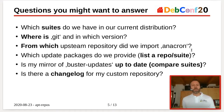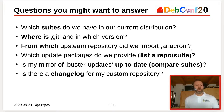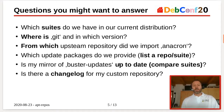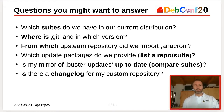With a setup like that, we have questions. For example: which suites do we have in our distribution, just to get an overview? Where is a single package — for example, git — and in which version? From which upstream repositories did we use a particular package? Which update packages do we provide — that is, listing a complete suite? Is my mirror of buster-updates up to date — so we want to compare suites? And do we have a changelog for a particular repository, to track how things develop over time?